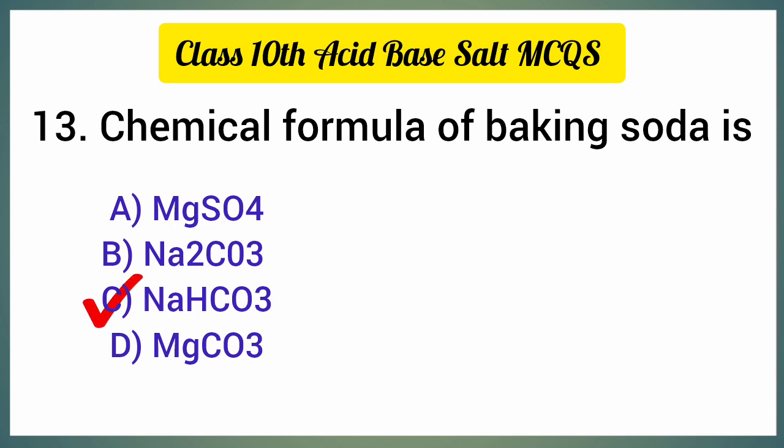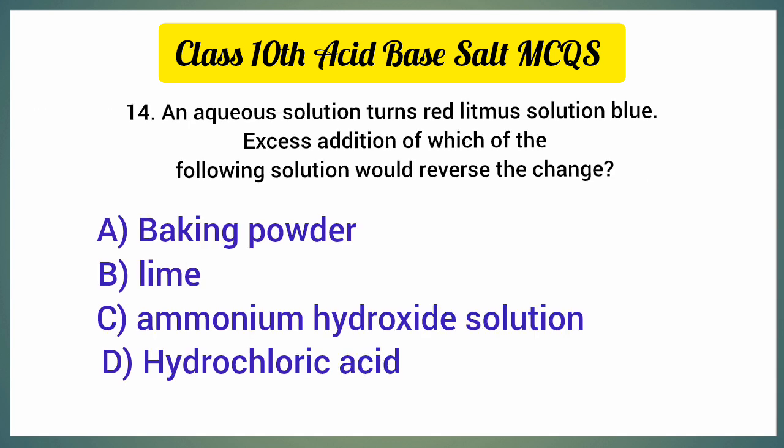The chemical formula of baking soda is — the correct option is option C, NaHCO₃. An aqueous solution turns red litmus solution blue; excess addition of which of the following solution would reverse the change? The correct option is option D, hydrochloric acid.